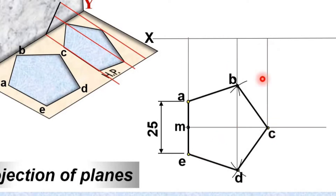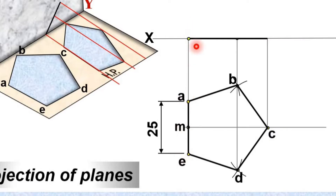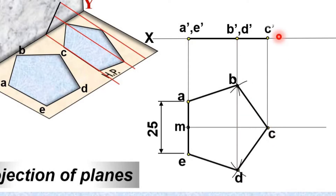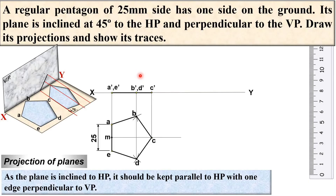Now draw the projection to get the front view. Give the names: AE becomes A-dash E-dash, B-dash D-dash, and C-dash. This is your first stage where we have assumed the plane is parallel to HP.